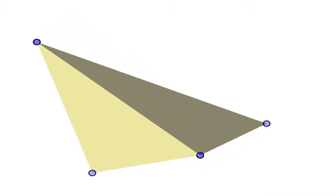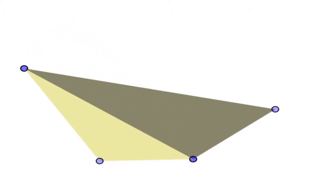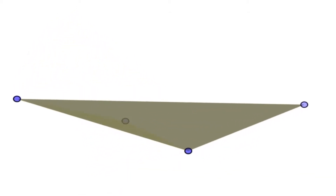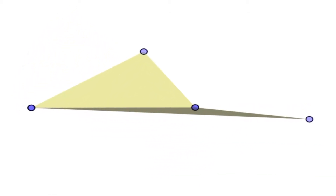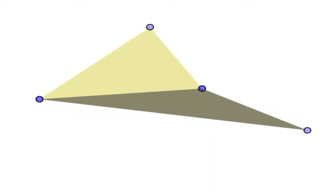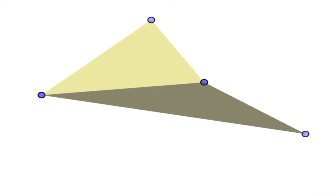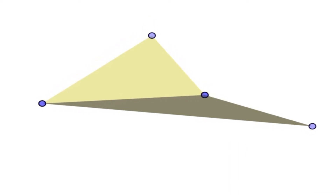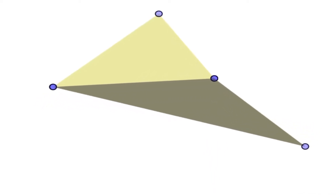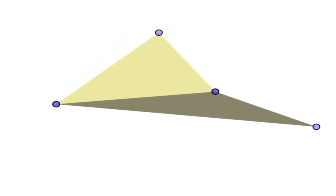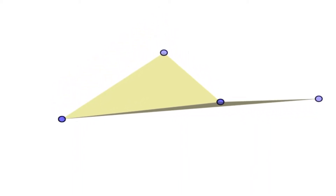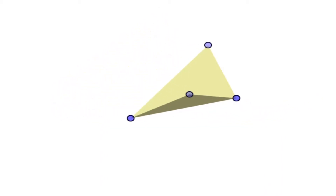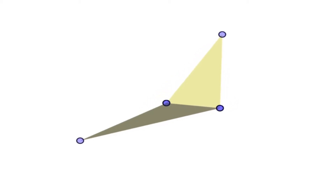Here's four points which are not coplanar. You'll notice that groups of three of them will be on the same plane as we discussed, but all four points together do not exist on the same plane. And therefore, these four points are not coplanar.